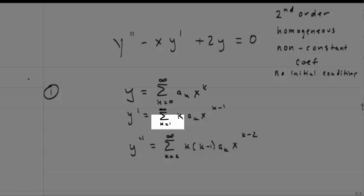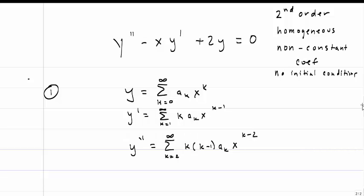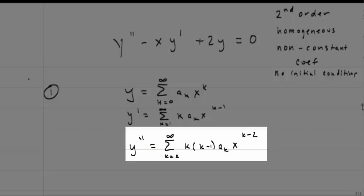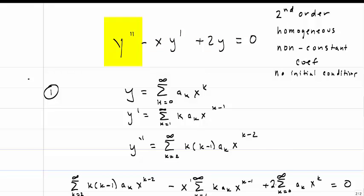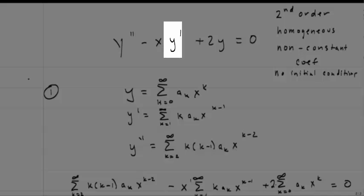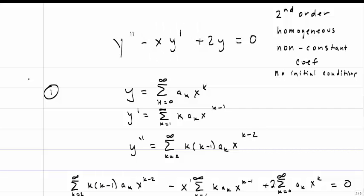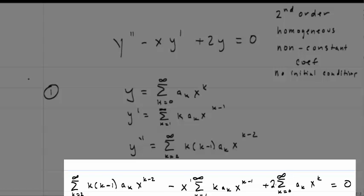We start y prime at k equals 1 instead of k equals 0, because the first term when k equals 0 is a constant, and its derivative is 0. When we take the second derivative y double prime, we similarly start at k equals 2, using the simple roll-down rule for derivatives. Now I plug back into the differential equation: wherever I see y double prime I substitute the summation from k equals 2, then the negative x times y prime term, and plus 2 times y — and since it's homogeneous, it equals 0.